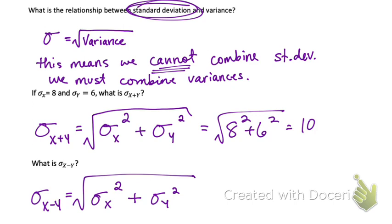This rule is only true for standard deviation. The mean is going to act exactly like we think it should: if we're adding distributions, we add their means; if we're subtracting distributions, we subtract their means. Standard deviation is the weirdo of stats.